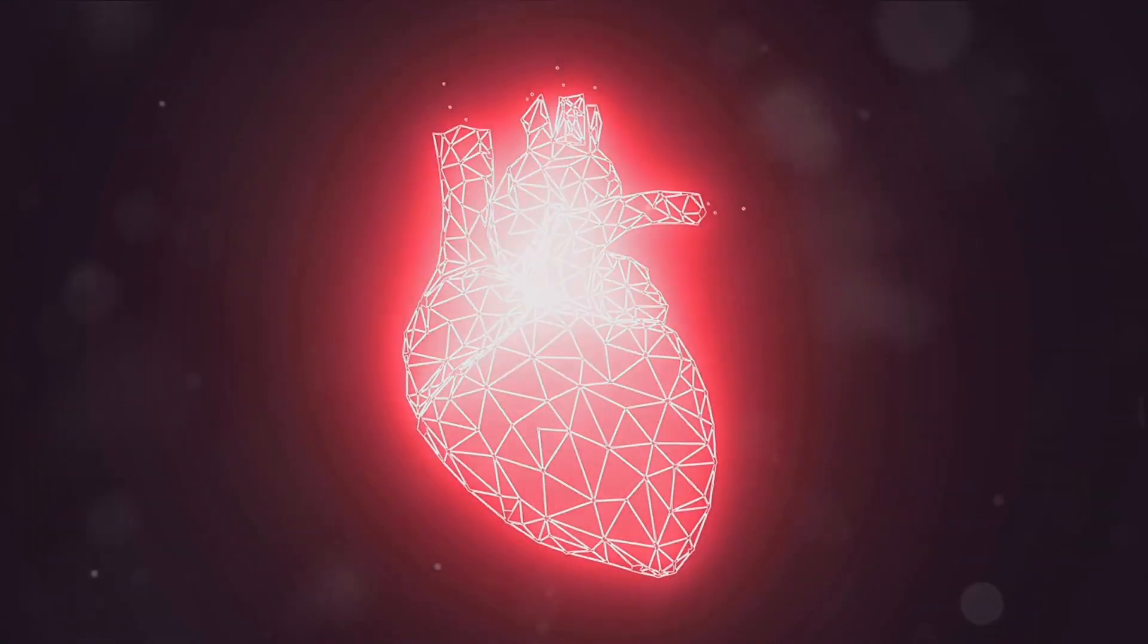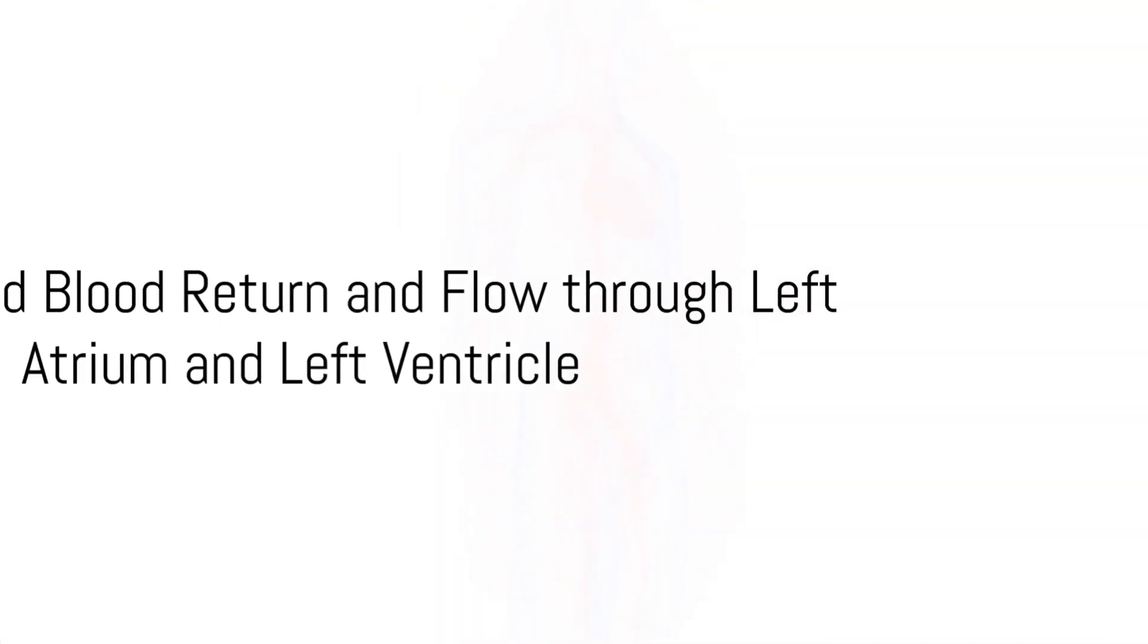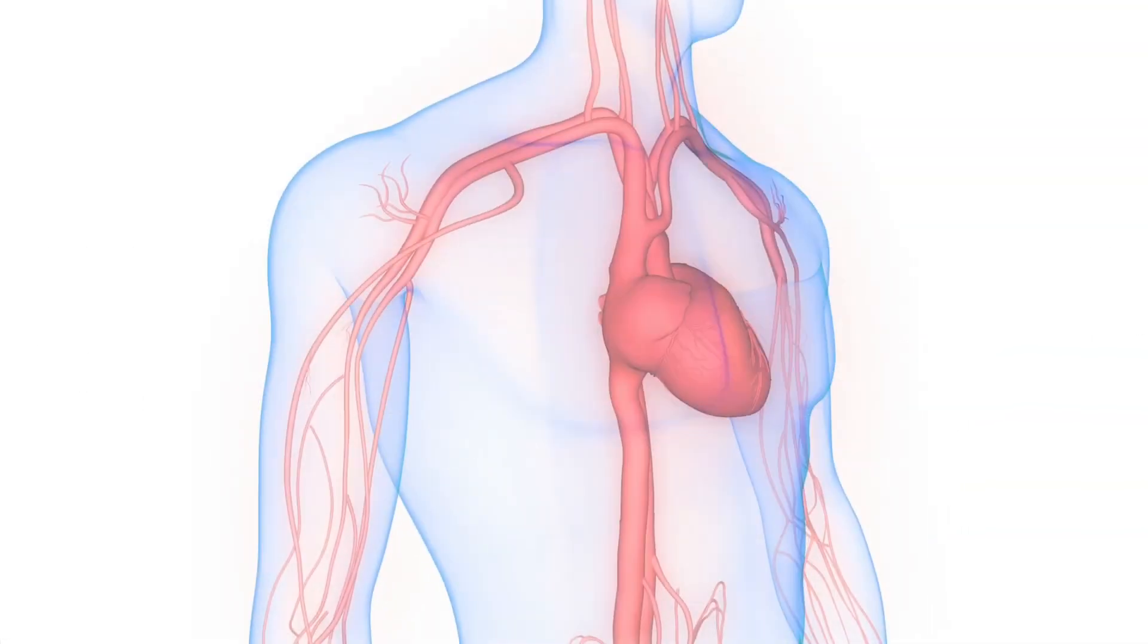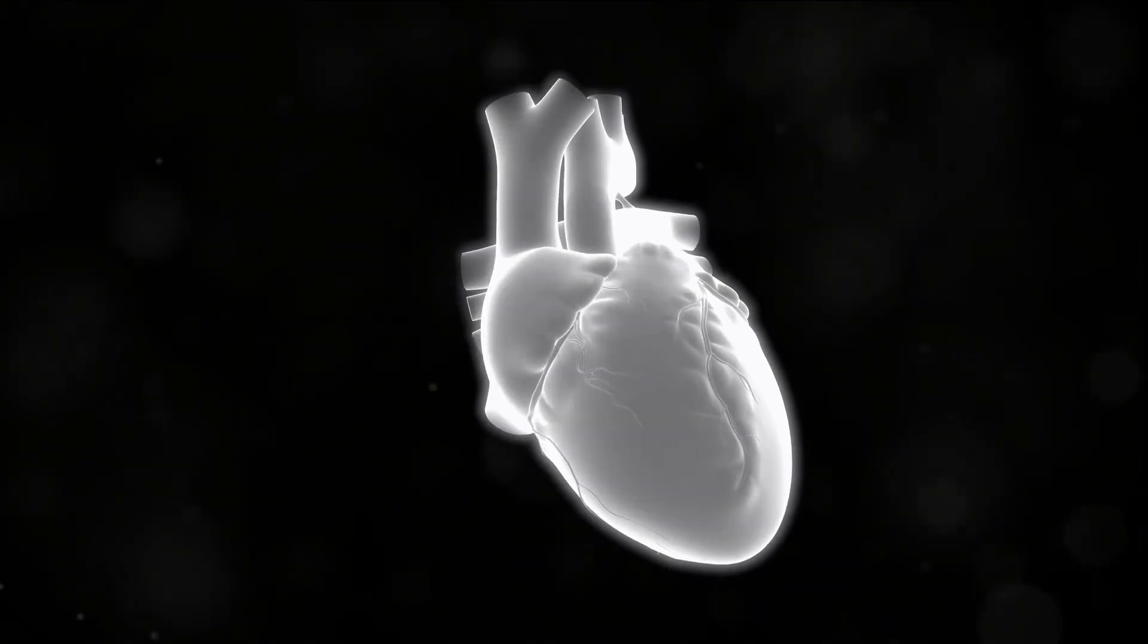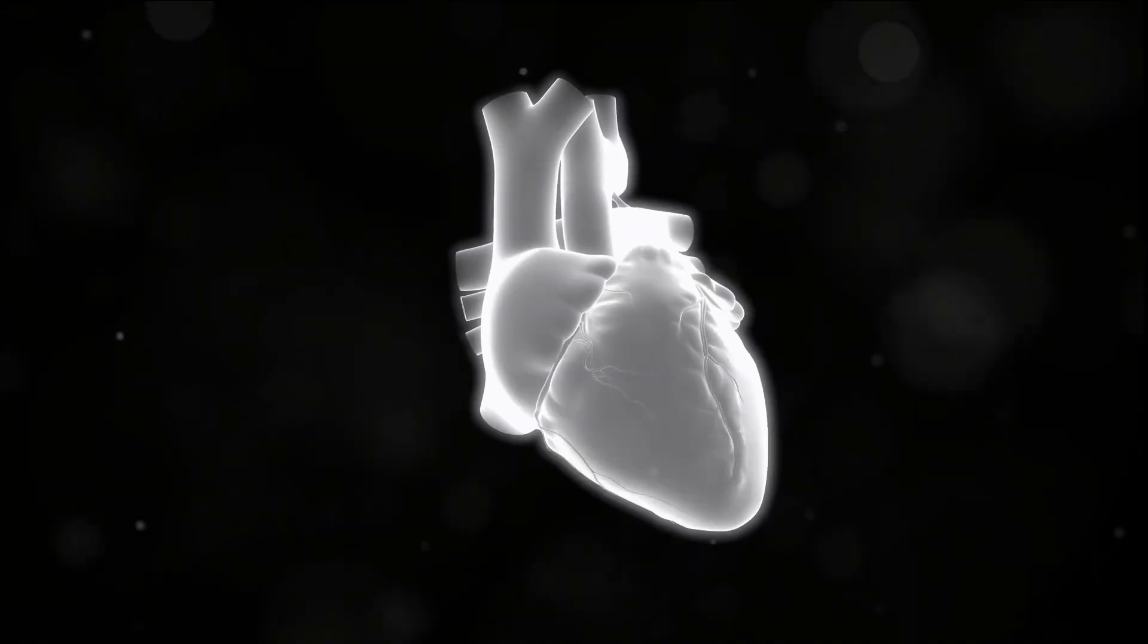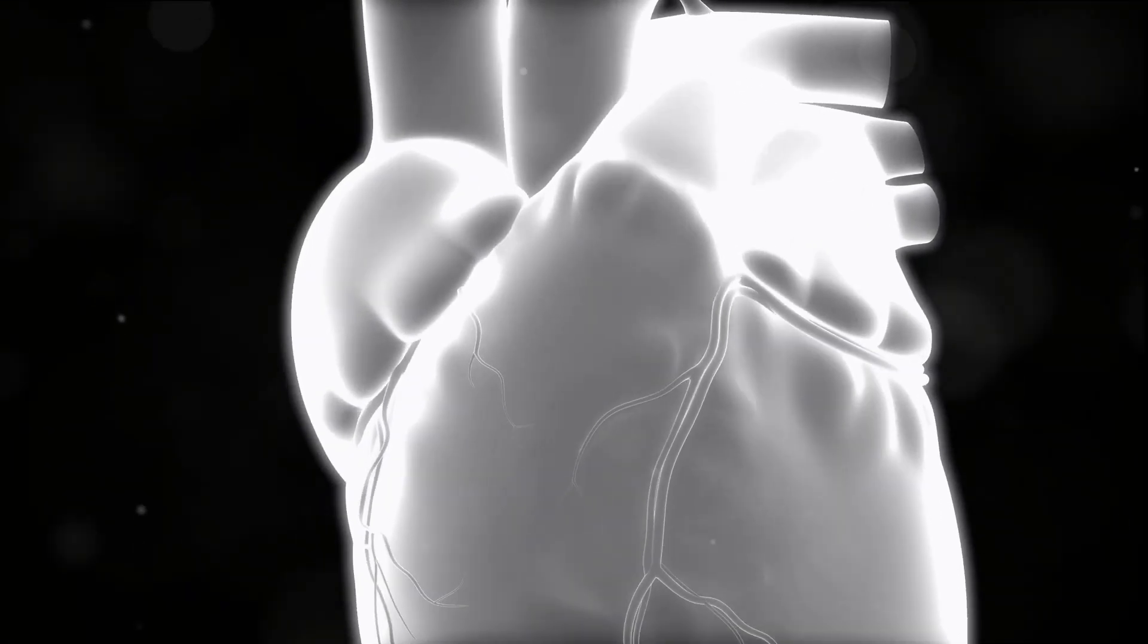Here, in tiny air sacs called alveoli, the blood picks up oxygen. Then, this oxygen-rich blood returns to the heart via the pulmonary veins, entering the left atrium. The oxygenated blood then crosses the bicuspid or mitral valve and enters the left ventricle, ready to be pumped out to the body.